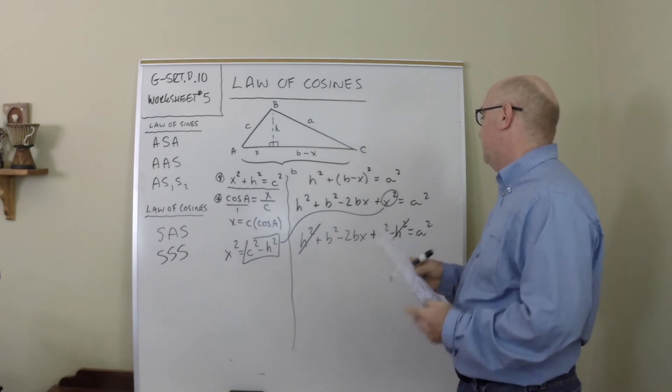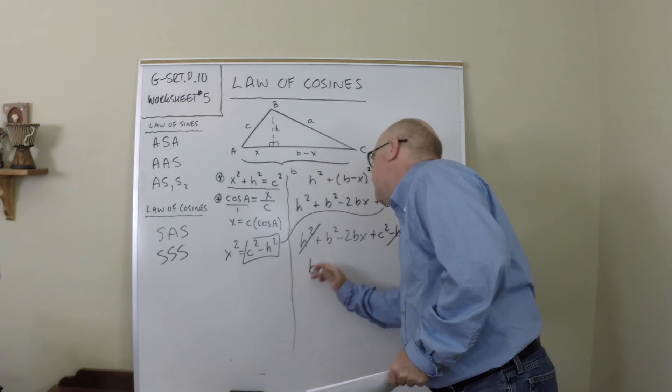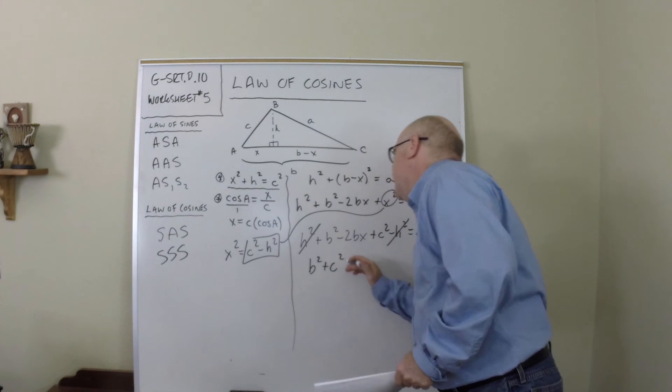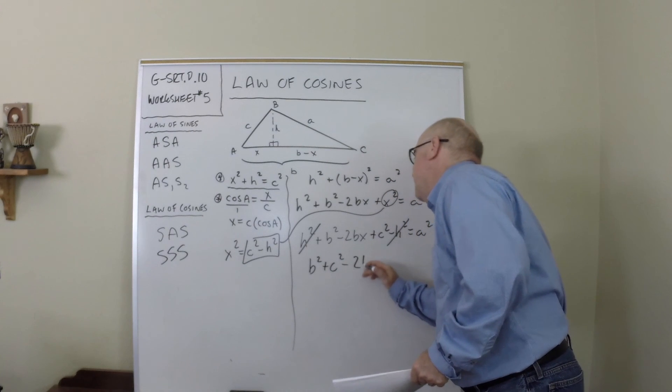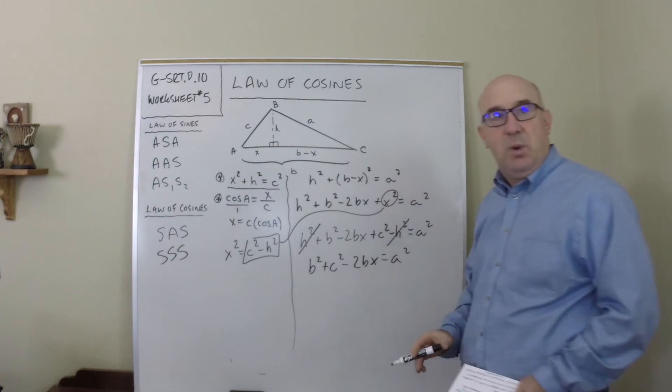You can see that all of a sudden what once was involved is now gone. h is no longer an item. And we can start to see a little bit of the Pythagorean theorem appearing again. You see these squares happening.